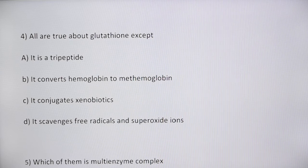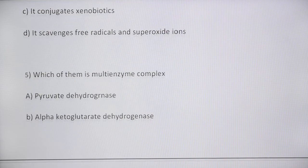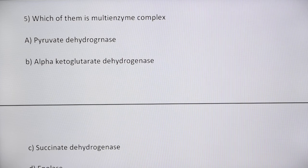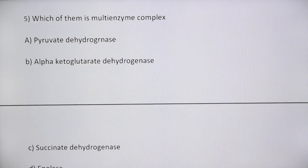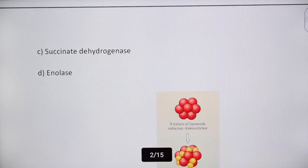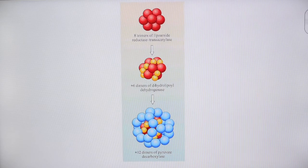Next question: which of the following is a multi-enzyme complex? Options are pyruvate dehydrogenase, alpha-ketoglutarate dehydrogenase, succinate dehydrogenase, and enolase. A multi-enzyme complex contains a combination of different enzymes. In the case of pyruvate dehydrogenase, it contains a combination of two or three active enzymes.